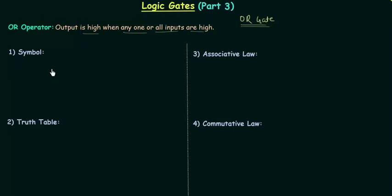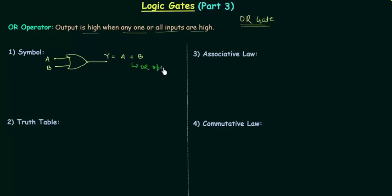First we will discuss the symbol for OR gate. I will make a two-input OR gate. Y is the output and I will have two inputs, A and B. So Y is equal to A OR B. This plus here is the OR operator — this is not the sum we do in mathematics, this is simply the OR operator. Now I will make a three-input OR gate. The output is Y and the inputs are A, B, and C. So output is equal to A OR B OR C.